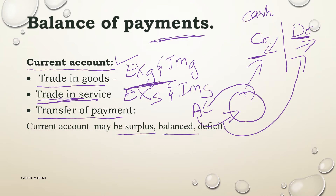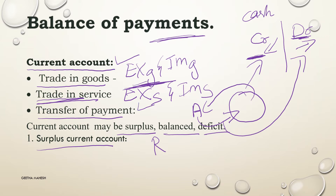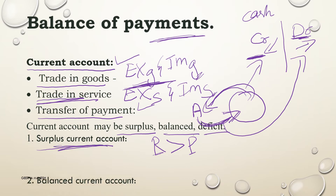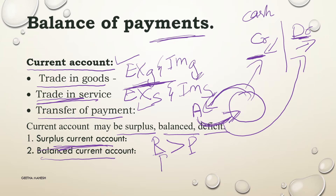The current account has three situations: surplus, balanced, and deficit. A surplus current account occurs when receipts — from exports of goods, services, and gifts or remittances received — are more than payments for imports. A balanced current account occurs when receipts are equal to payments.